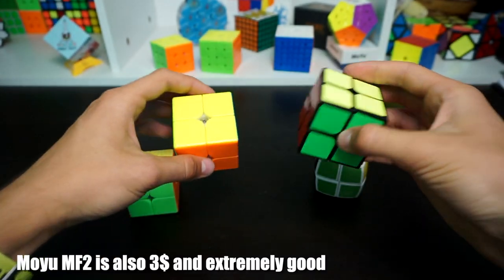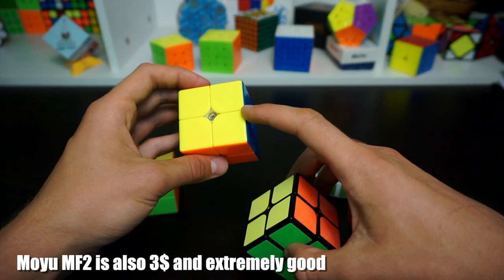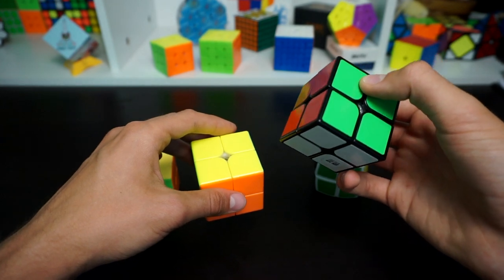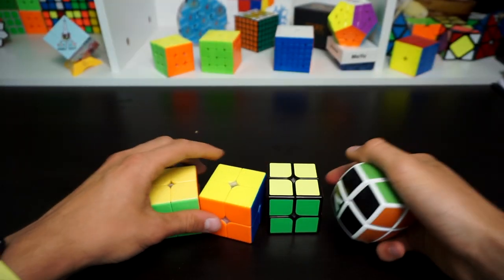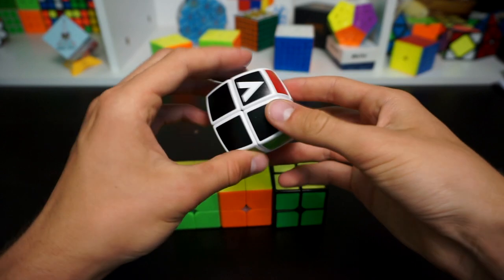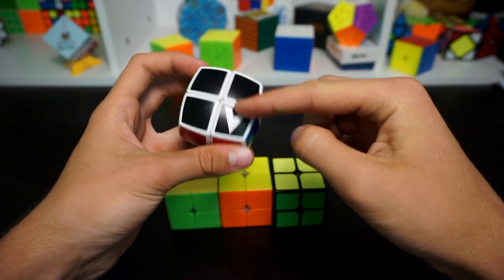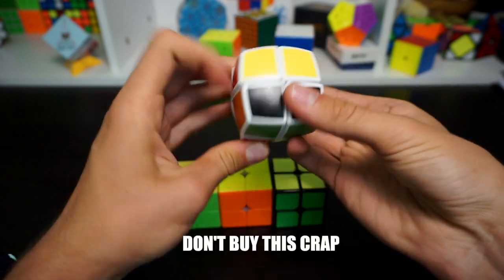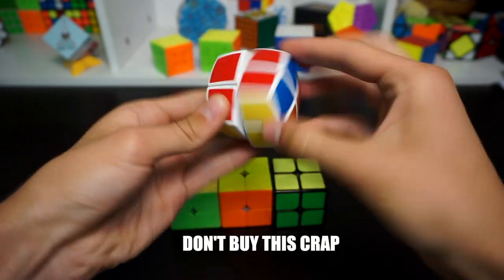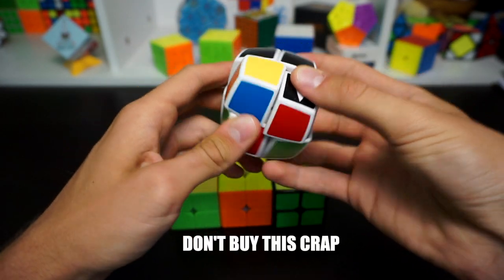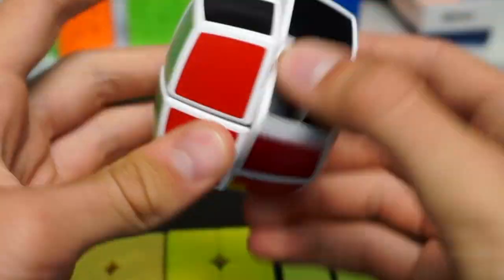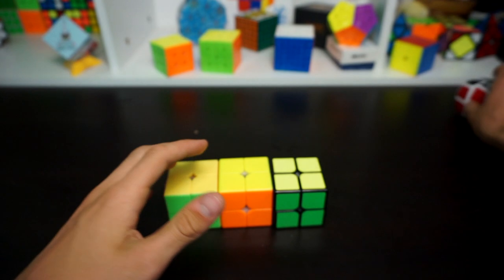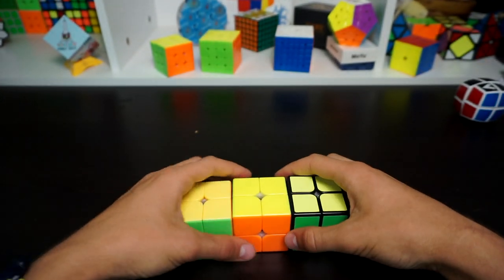So here I have the Chidi S which costs like three dollars and it's also really good. If you're a beginner, I see no point of buying the Walk 2 magnetic for 17 dollars if you can buy a really good cube for just a fraction of that. Here's also a good thing to consider.